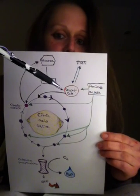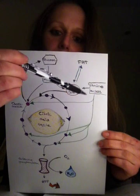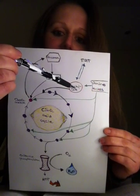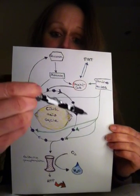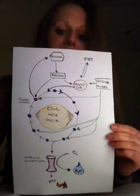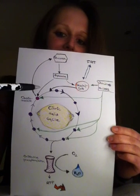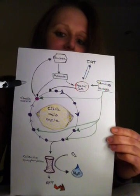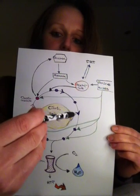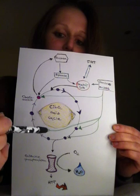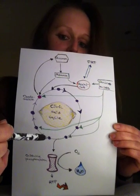These macromolecules are broken down into smaller molecules that can enter the citric acid cycle. Citric acid cycle is represented by this lemon here. Citric acid cycle is a series of biochemical reactions where different intermediates are transformed into each other. Each intermediate is represented by a circle.